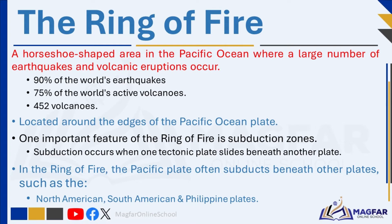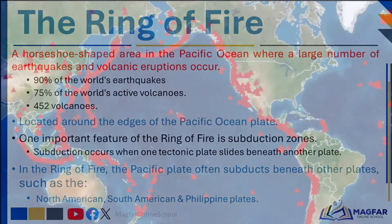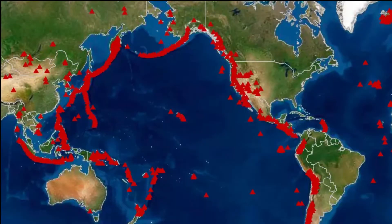It contains a string of 452 volcanoes. This 40,000-kilometer line of volcanoes, tremors, and earthquakes runs around the edge of the Pacific Ocean. The Ring of Fire stretches from the western coast of North and South America, up through Alaska, down through Japan, Southeast Asia, and the Philippines, and along the western coast of South America.